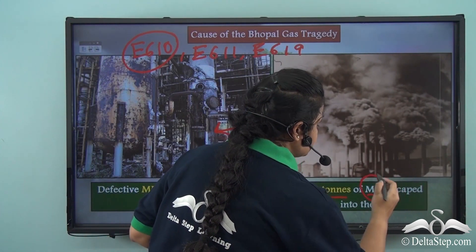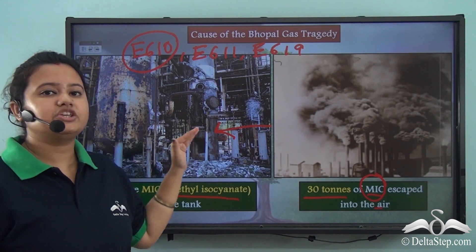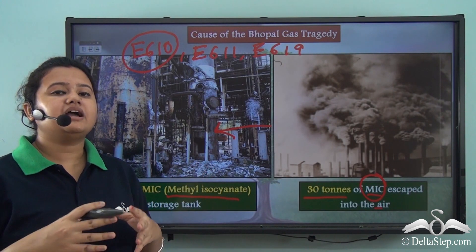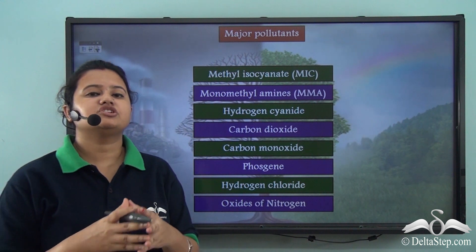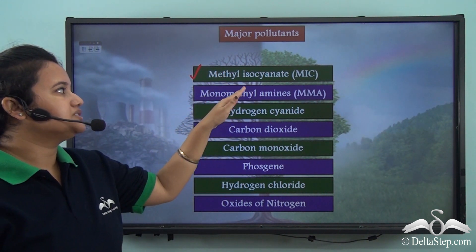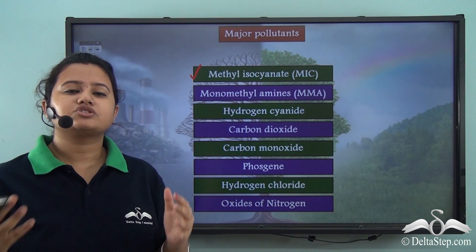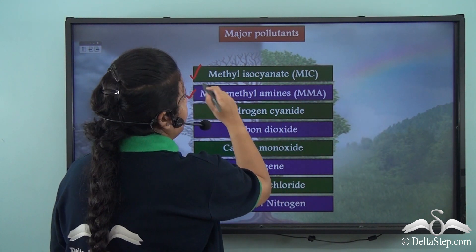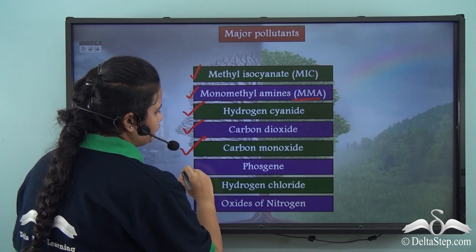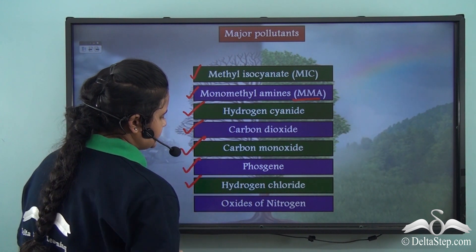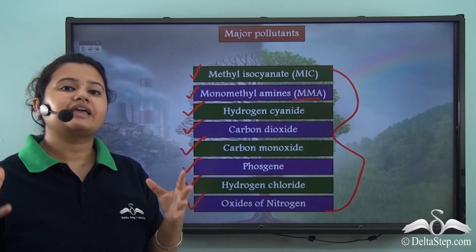MIC was the main toxic gas released from this storage tank. Apart from MIC, many other pollutants were also present in this gas cloud. Those pollutants include monomethylamines (MMA), hydrogen cyanide, carbon dioxide, carbon monoxide, phosgene, hydrogen chloride, and oxides of nitrogen. These are the major pollutants released from the UCIL chemical plant.